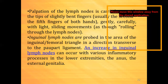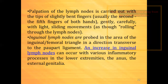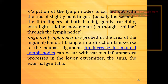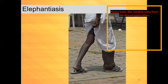The inguinal lymph nodes are probed in the area of the inguinal or femoral triangle, in a direction transverse to the Poupart's ligament. An increase in inguinal lymph nodes can occur with various inflammatory processes in the lower extremities, the anus, and the external genitalia. This is the applied anatomy regarding the lymphatic system of the lower limb.